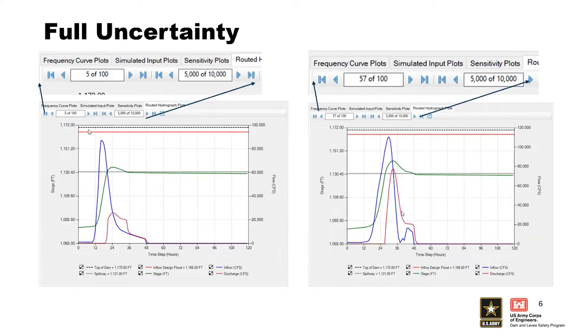The left hydrograph has a peak inflow of 88,000 CFS, while the right has a peak inflow of 112,000 CFS. The left hydrograph has a peak stage of 1135 feet, and the right has a peak reservoir stage of 1141 feet. The left hydrograph released a maximum discharge of 25,000 CFS, and the right released a maximum discharge of about 75,000 CFS.